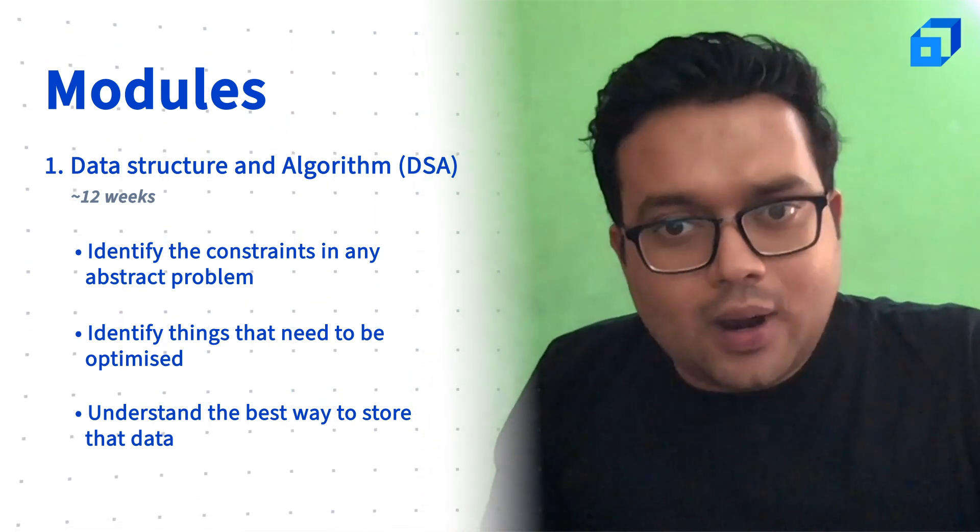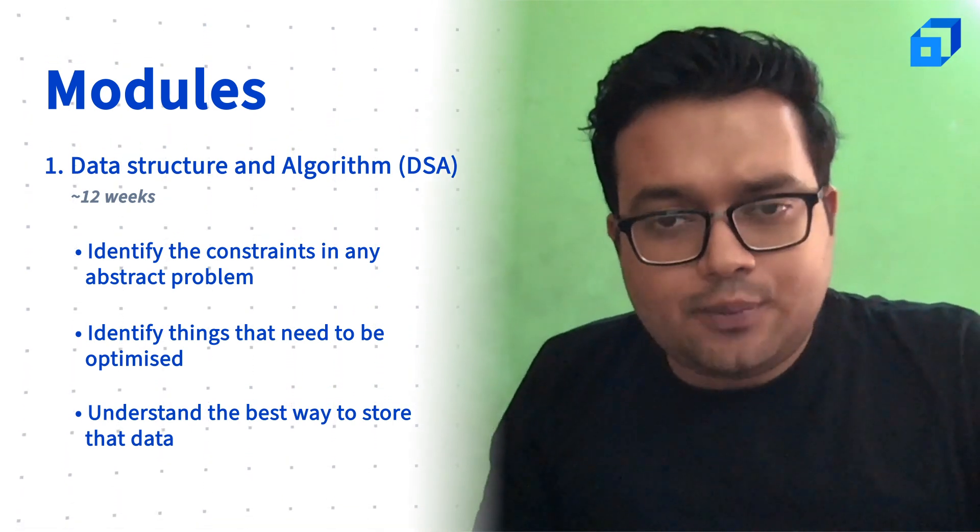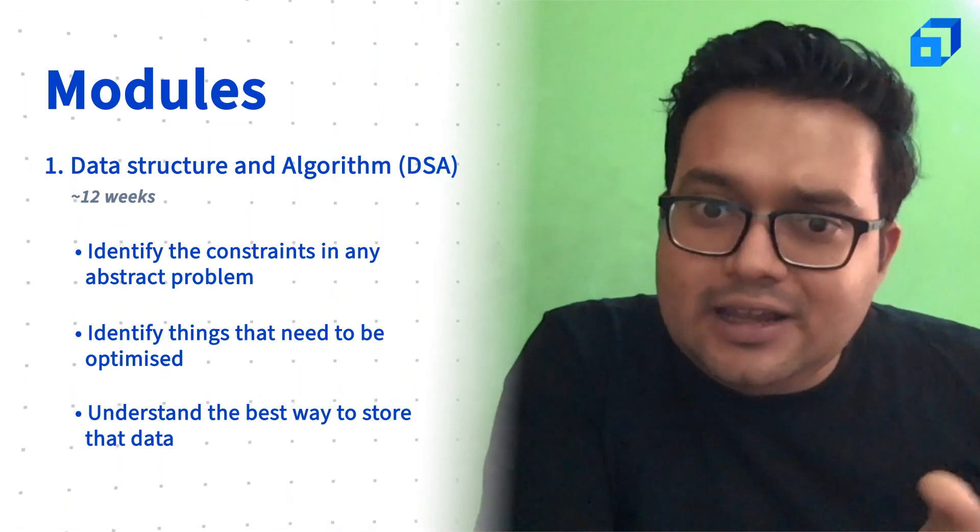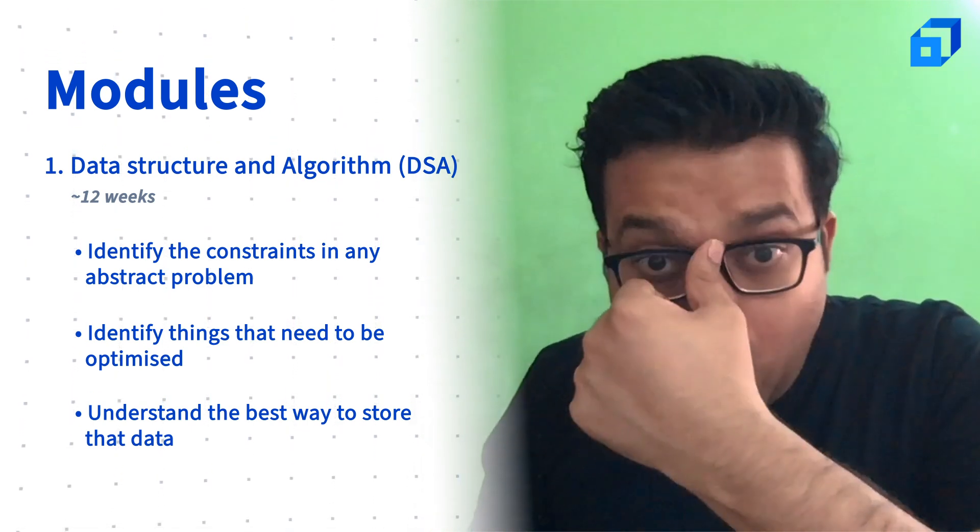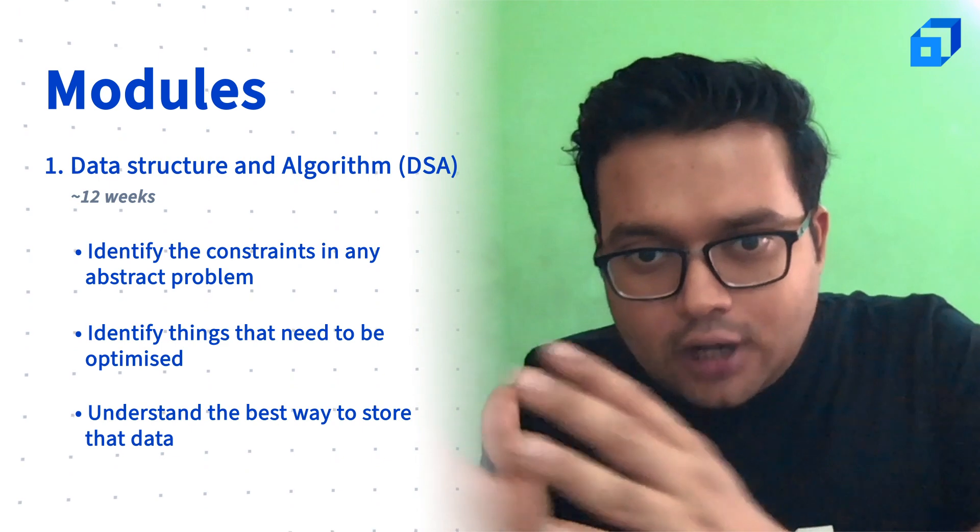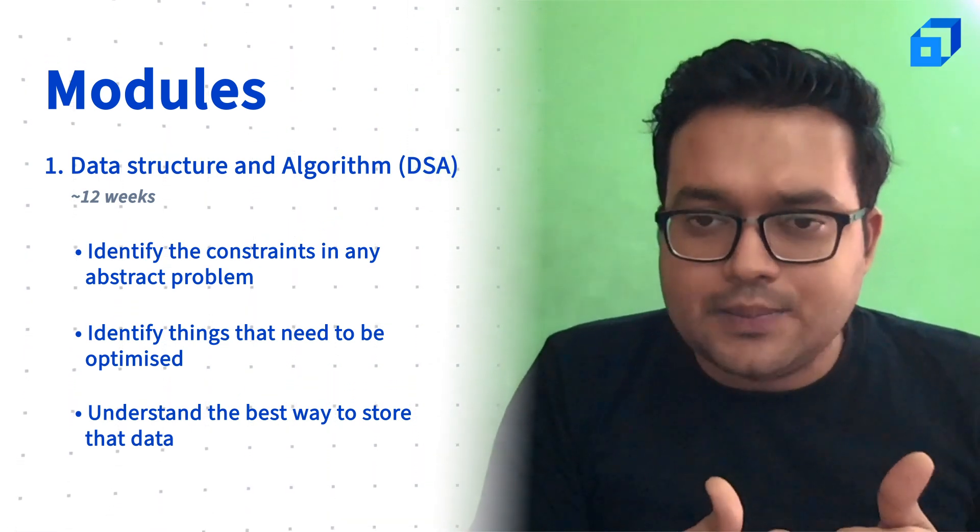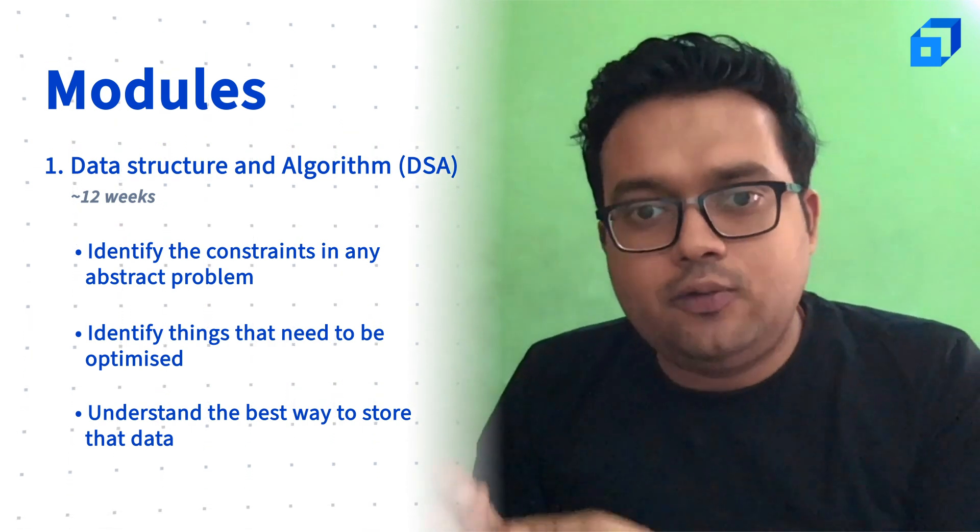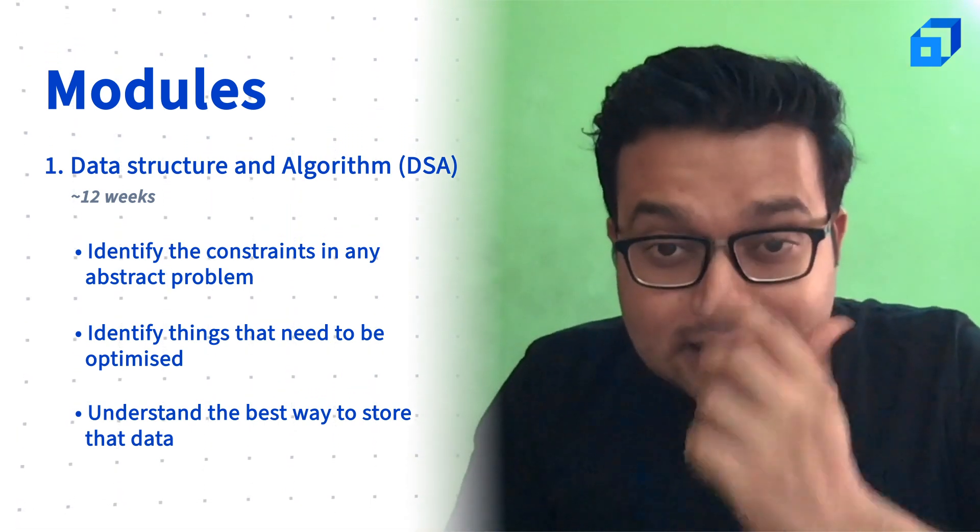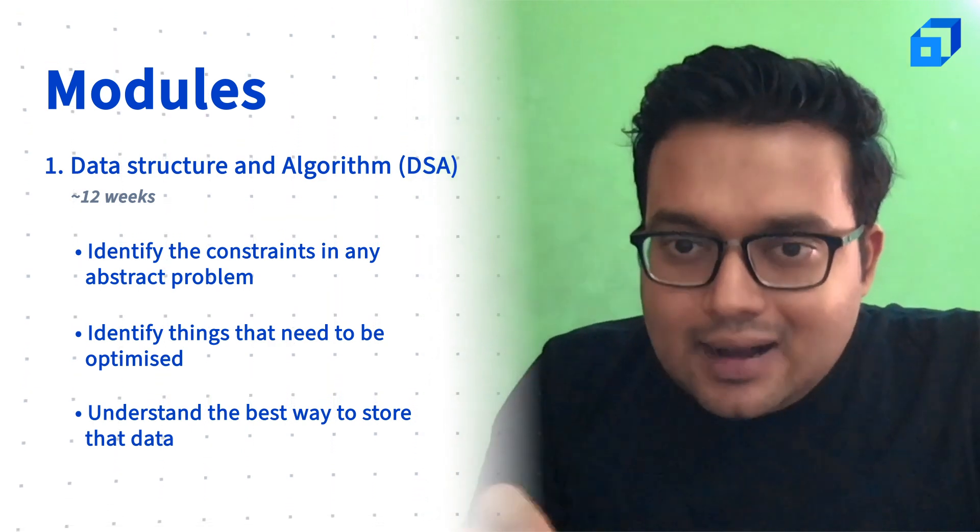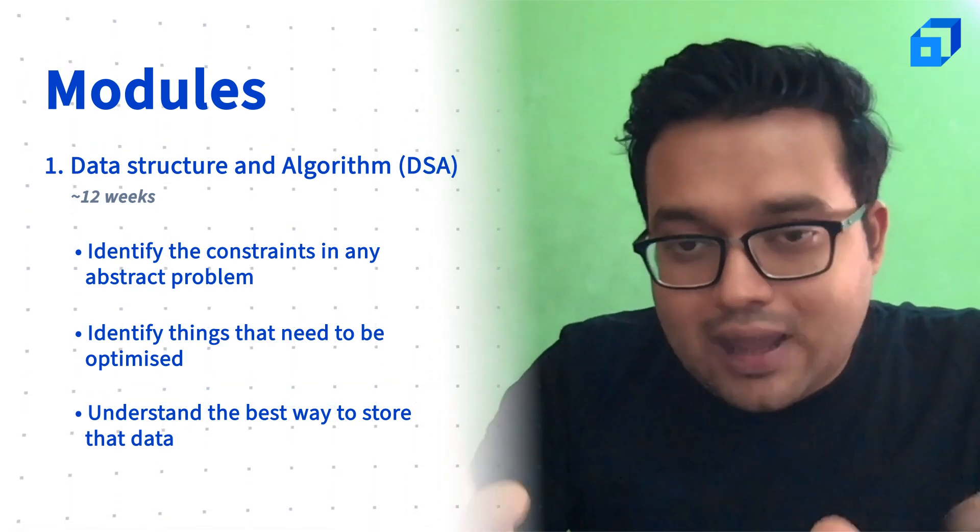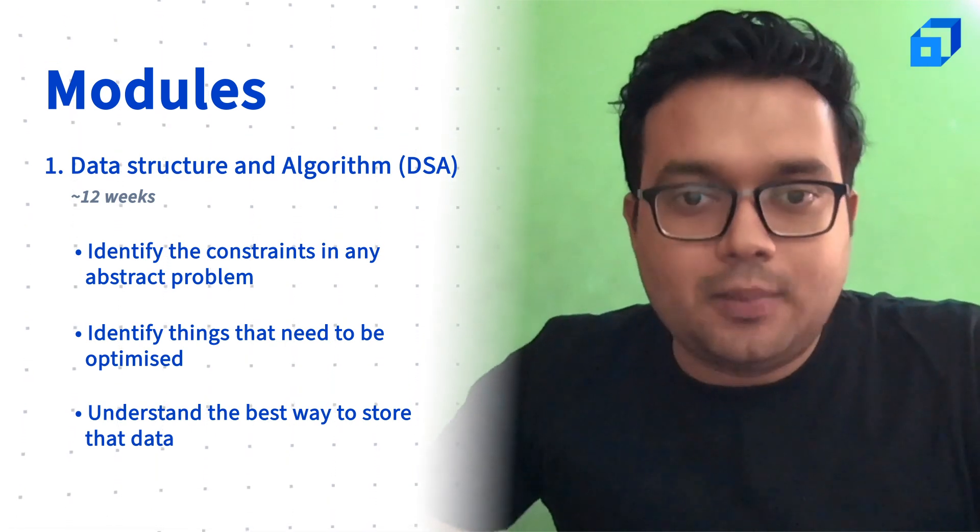The underlying story of this entire module is to look at any abstract problem, identify the constraints, identify mathematically the things you're trying to optimize for, and then understand what's the best way to store that data. What kind of data structure would you want to use? What kind of algorithm are you going to use to solve that problem? What kind of paradigm does that problem fall into?